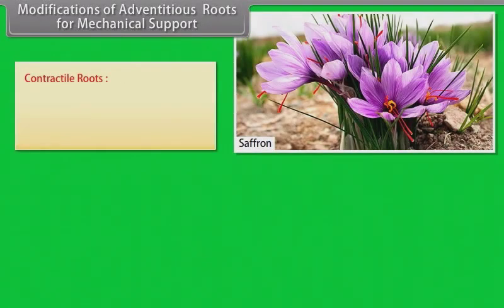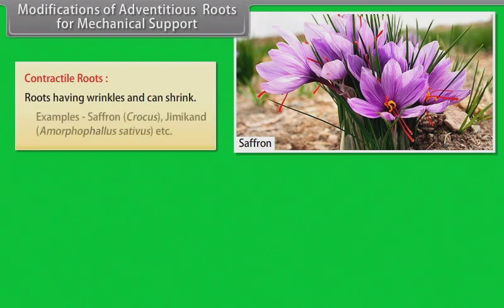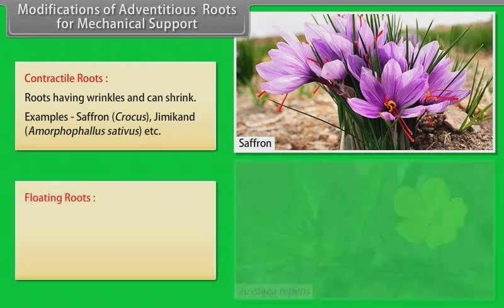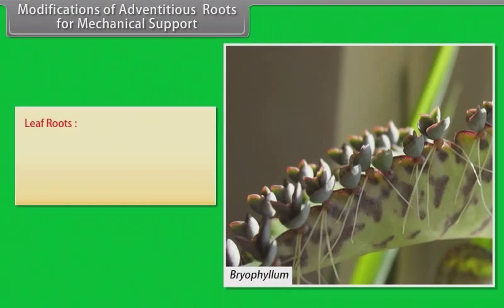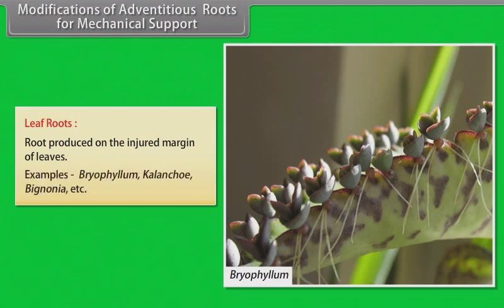Contractile roots: roots having wrinkles that can shrink. Examples: saffron, Amorphophallus, etc. Floating roots: thick, spongy, fleshy roots with air-filled chambers arising from the nodes of the stem. Example: Jussiaea. Leaf roots: roots produced on the injured margin of leaves. Examples: Bryophyllum, Bignonia, etc.